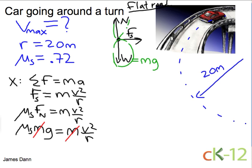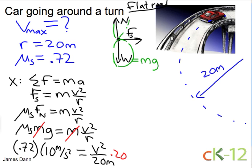And we can plug in our values here. We have 0.72 for the coefficient of static friction times 10 meters per second squared, and that equals the velocity squared, all divided by the 20 meters. Now I will multiply both sides by 20 meters. These guys cancel. And 0.72 times 10 meters per second squared times 20 meters is equal to 144 meters squared over second squared, which is equal to v squared.